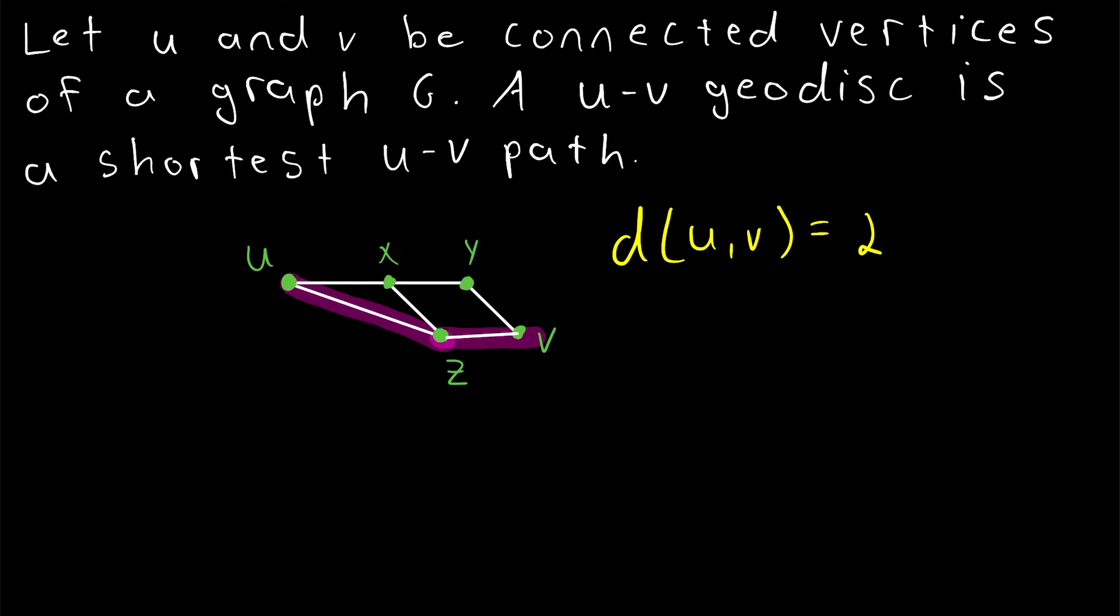So since the distance between u and v is equal to 2, and this here, we'll write this P, is the path from u to z to v. This is a shortest u-v path. It's a u-v path whose length is the distance between u and v. And so, this path P is, by definition, a u-v geodisc.